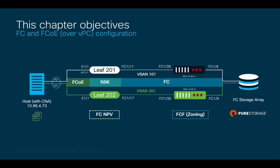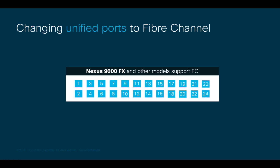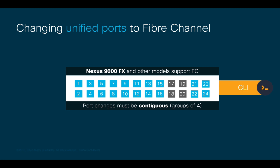Since we will need Fiber Channel uplinks to connect from our ACI leaf nodes on port 1/17 to the MDS switches on port 1/35, we must make sure that we have a switch model that supports unified ports, such as Nexus 9000 FX switches. Another important consideration is that when we perform port conversions from Ethernet to Fiber Channel, we have to do it in contiguous groups of 4, for example 1-4, 5-8, and so on. In our case, we need port 1/17, therefore I'll have to convert ports 17-20 to Fiber Channel. You can do such task either through the CLI or the GUI, and after you do it, you will need to reload the switches.